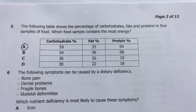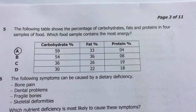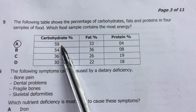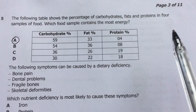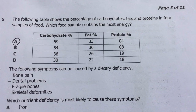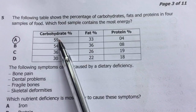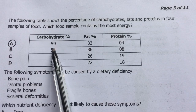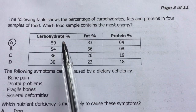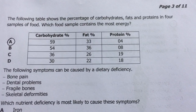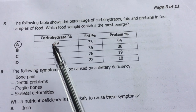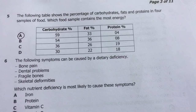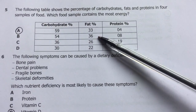Question five: the following table shows the percentage of carbohydrates, fats, and proteins in four food samples. Which food sample contains the most energy? I looked at the carbohydrate percentage as an energy source. Comparing the samples, one had the highest carbohydrate at around 36%, similar to another at 33%, but I chose food sample A because a larger combined percentage is taken up by carbohydrates and fats — nutrients that are sources of energy — compared to the other samples.